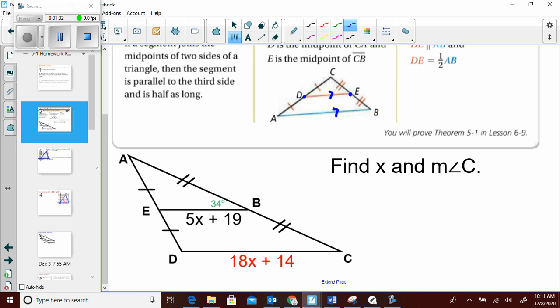So let's look here. Let's find x and the measure of angle C. Let's start with x. We have 5x plus 19. That's our mid-segment because you see midpoint, midpoint. It equals one half the base.